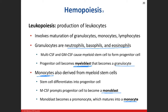A monocyte is the blood's circulating version of a macrophage. Macrophages only live in tissue. When they're floating through the blood, they're a monocyte. If you damage tissue or there's an infection, the monocyte will migrate to that area, transform into a macrophage — the Pac-Man cell — that eats up pathogens and damaged tissue so the body can repair it.